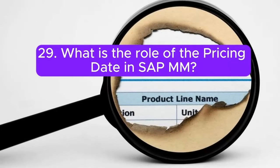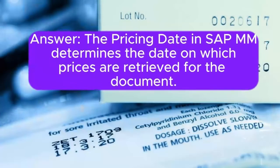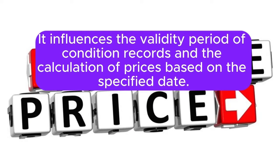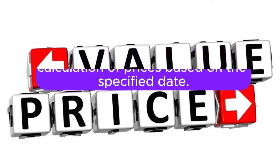Question 29: What is the role of the pricing date in SAP MM? Answer: The pricing date in SAP MM determines the date on which prices are retrieved for the document. It influences the validity period of condition records and the calculation of prices based on the specified date.